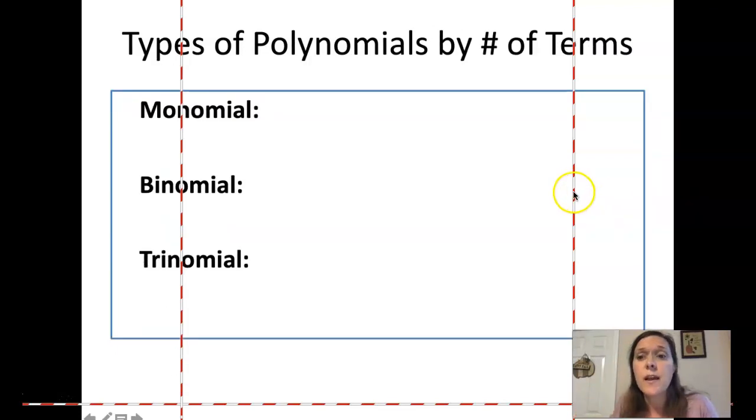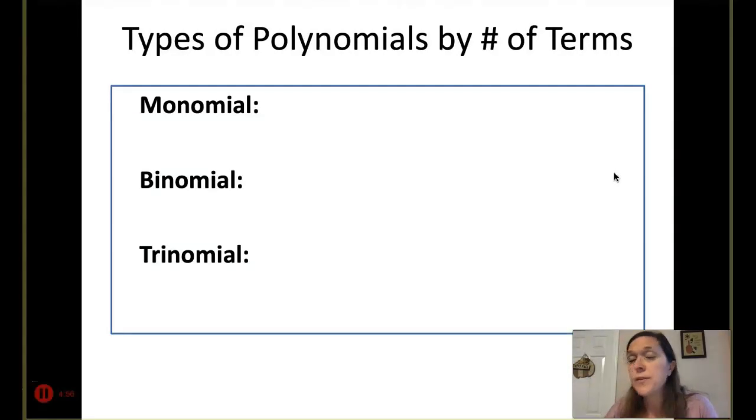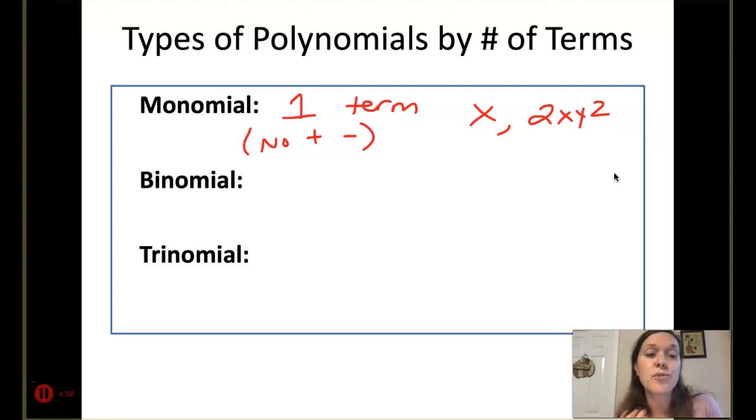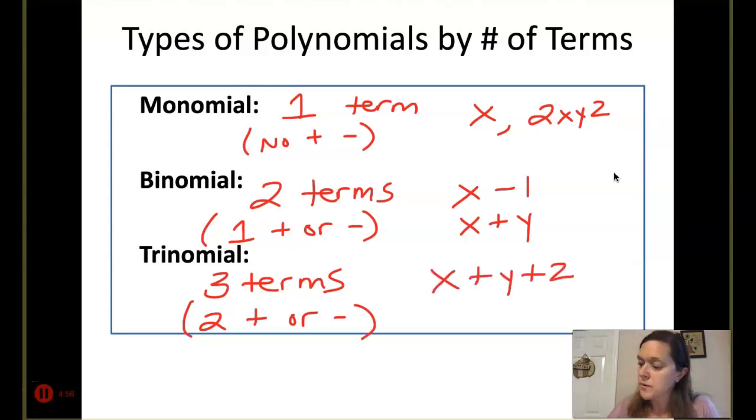We have different types of polynomials by the number of terms. A monomial has one term, which means no pluses or minuses, no addition. It's just x, or 2xyz. A binomial has two terms, which means one plus or minus. So x minus 1, or x plus y. A trinomial has three terms, which means two pluses or minuses. So x plus y plus z, or x squared plus 2x minus 1.